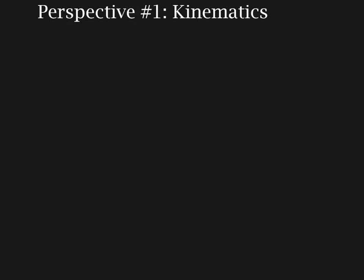Before we begin our example, I just want to go over one thing very quickly — a recap of what we talked about last time, so you have a nice short list of the properties for the various types of graphs. The position-time graph was the first graph we looked at. The slope was equal to the velocity, and the area was not applicable on a position-time graph. The y-intercept is equal to the initial position of the object.